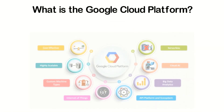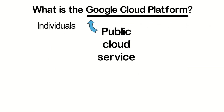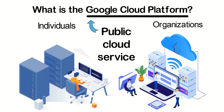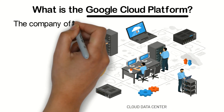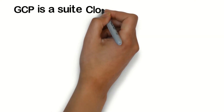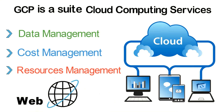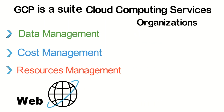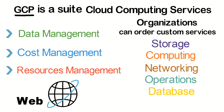What is the Google Cloud Platform? Google Cloud Platform is a public cloud service by Google that allows individuals and organizations worldwide to access computer resources housed in Google data centers. The company offers cloud services to its global client base for free or on a pay-per-use basis depending on the location. GCP is a suite of cloud computing services such as data management, cost management and resources management over the web. Besides, organizations can order custom services offered by GCP depending on their needs including storage, computing, networking, operations, database and data analytics.